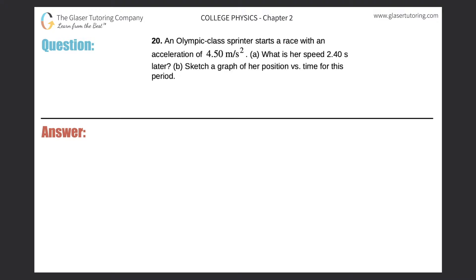Number 20. An Olympic class sprinter starts a race with an acceleration of 4.5 meters per second squared. Letter A. What is her speed 2.4 seconds later?